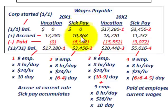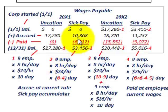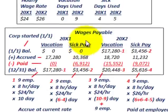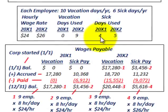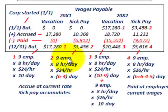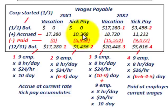For 20X1 sick pay, the beginning balance is also zero. The accrued amount: 9 employees, 8-hour days, $24 per hour for 6 days comes to $10,368. Paid out: employees used 4 days per employee at $24 per hour, 8 hours, 9 employees — that's $6,912. So the ending balance is $10,368 minus $6,912, giving $3,456.